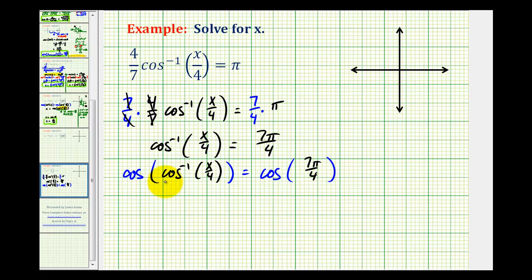We have the cosine of inverse cosine of x over four. Cosine and inverse cosine undo each other, so this simplifies to x over four equals, on the right side, the cosine of seven pi over four.